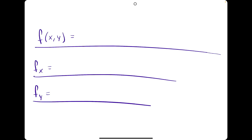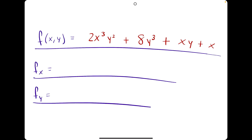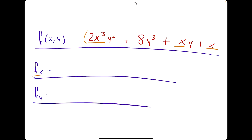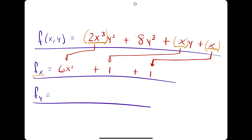Let's try one more example with the function 2x cubed y squared plus 8y cubed plus xy plus x. Starting with the derivative with respect to x, we identify all x terms: 2x cubed, x, and x. Taking derivatives: 2x cubed goes to 6x squared, and each x goes to 1. But here's the catch — the first term 2x cubed was being multiplied by y squared, and anytime we have a y squared attached to an x term the y term will not go to 0.